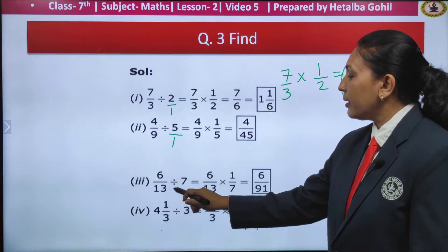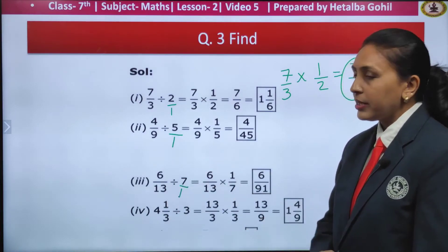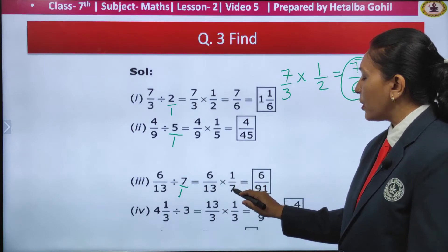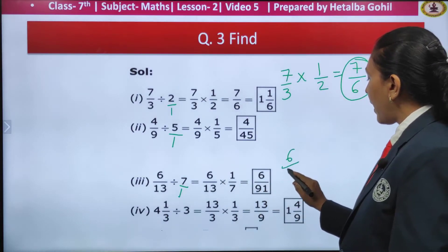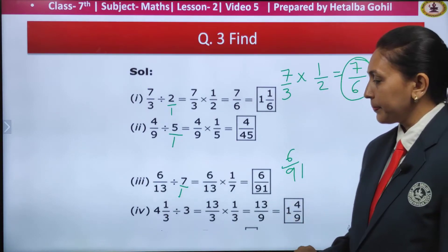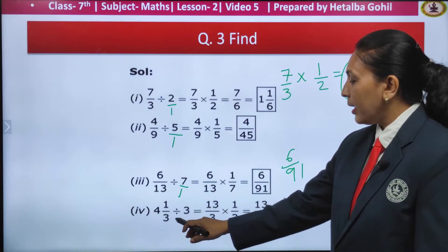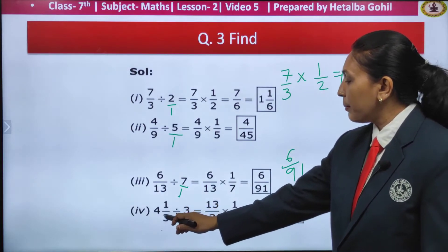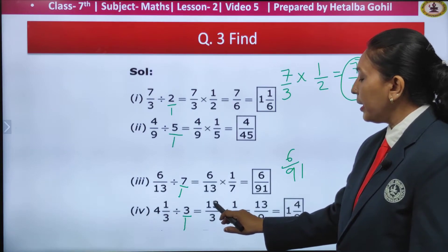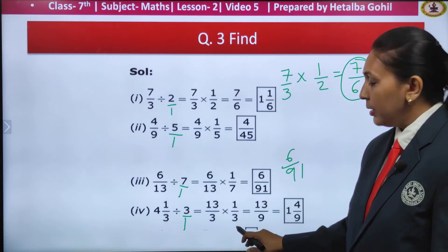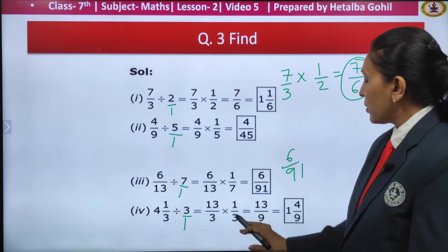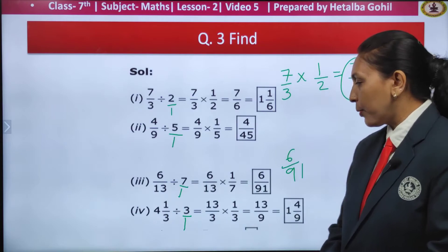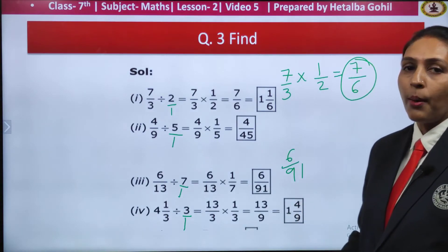Third one: 6 by 13 divided by 7. I will take 1 as the denominator. The next step: 6 upon 13 multiplied by 1 upon 7. Multiplying the numerators, I get 6 by 91 as my answer. Next: 4 and 1 by 3 divided by 3. Again 3 has no denominator — take it as 1. Converting the mixed fraction into improper fraction, I get 13 by 3 multiplied by 1 upon 3. Multiply the numerators: 13 ones are 13 and 3 threes are 9. Converting to mixed fraction, I get 1 and 4 upon 9.